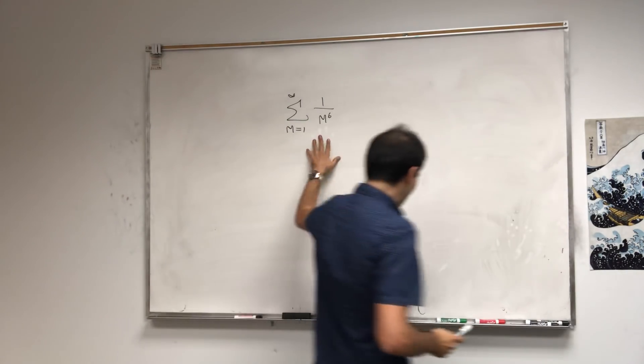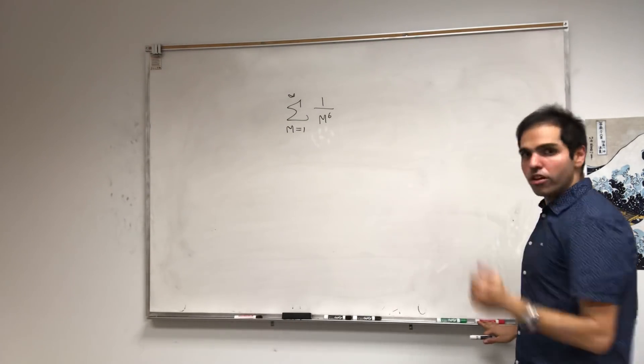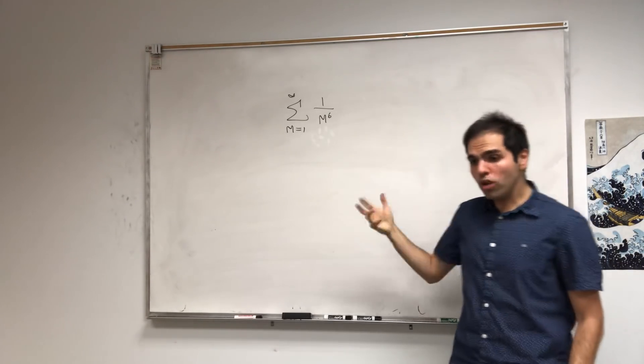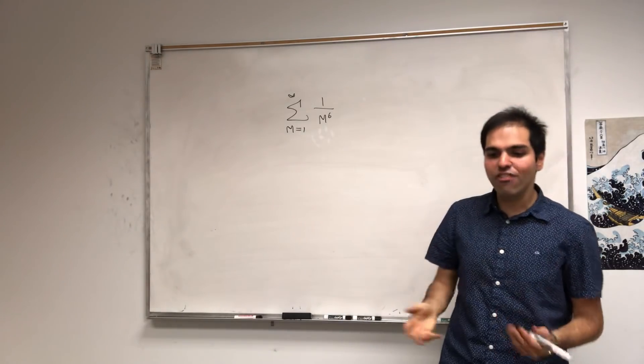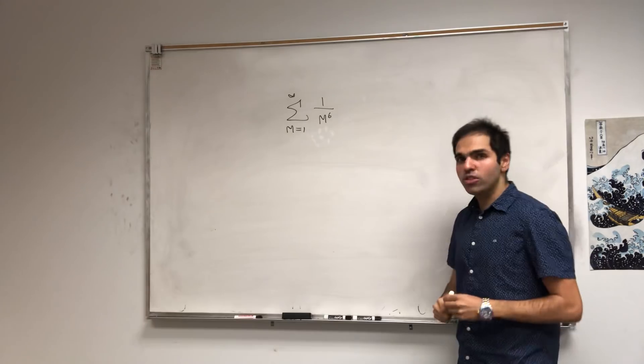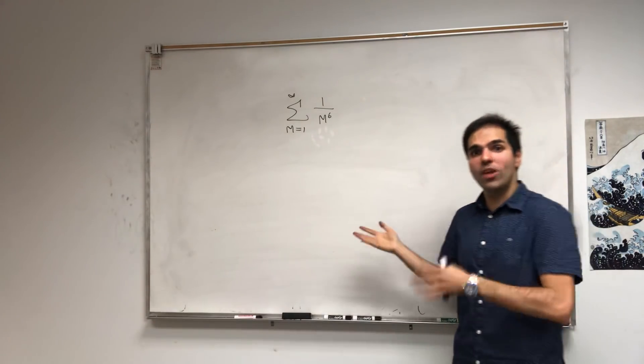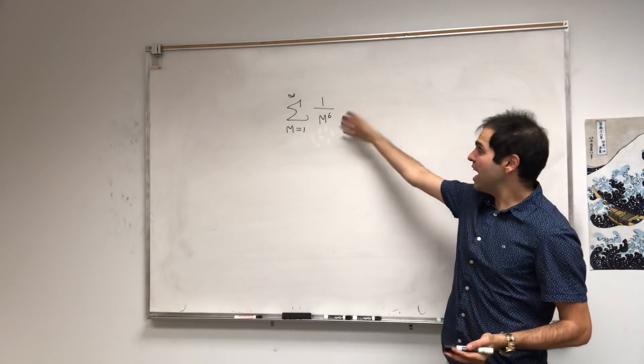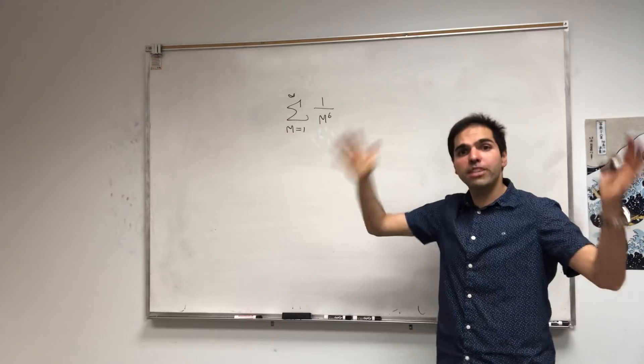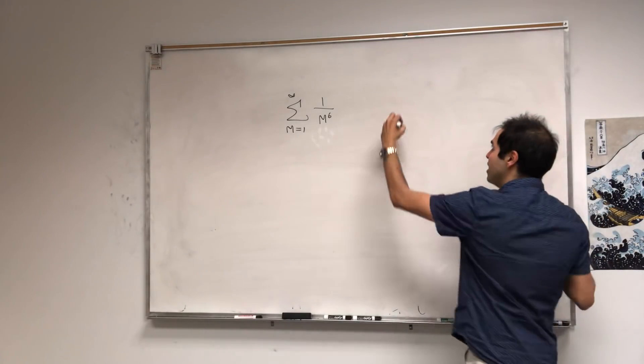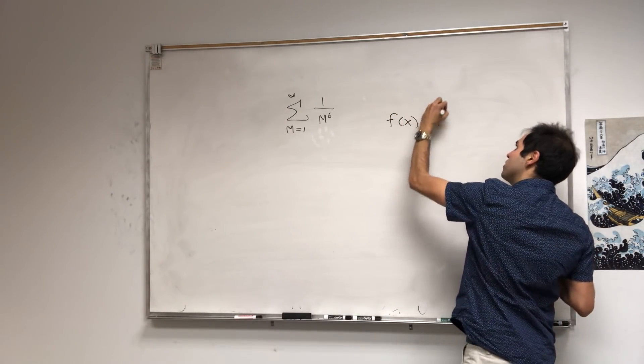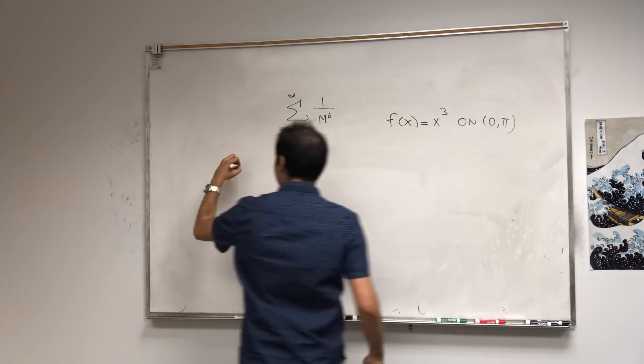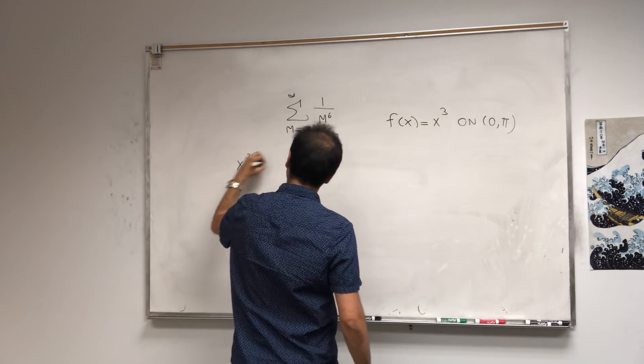And how do we do this? Well, using what's called Parseval's identity. But which function do we use now? For 1 over n squared, we have f(x) equals x. For 1 over n to the fourth, which is n squared squared, we had f(x) equals x squared. And now, 1 over n to the sixth, it's n cubed squared. So let's use f(x) equals x cubed.